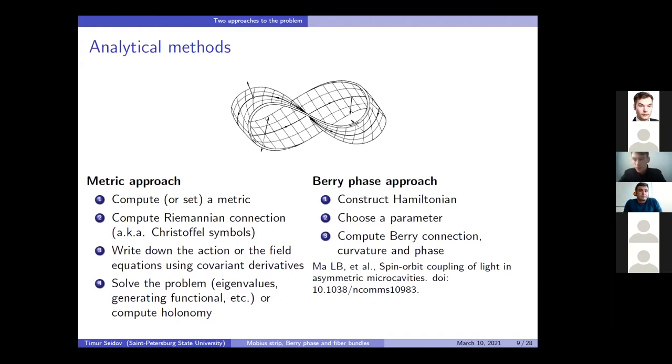Two approaches to the Möbius strip problem that you can find in the literature are the traditional Berry phase approach and the differential geometry approach. There is also a third one which uses the effective Hamiltonian with spin orbital coupling, but it is on one side something in the middle of two approaches and on the other side it falls off the scheme that I'm going to present today. So we're not going to discuss it. I believe that you are more familiar with the Berry phase method than I am and you can find its application to the flat Möbius strip in the link on the slide.